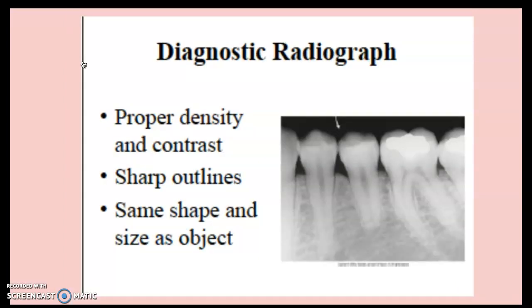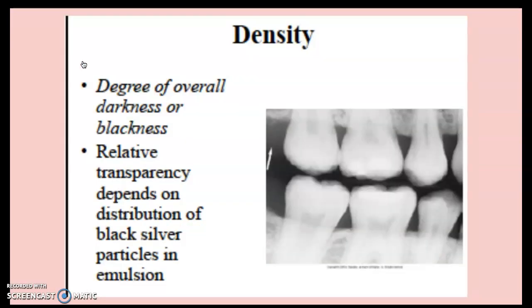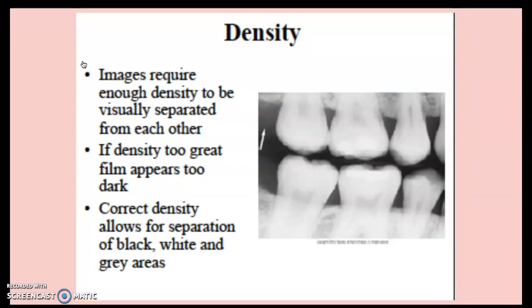A diagnostic image has the proper density and contrast, with sharp outlines and the same shape and size as the actual object — nothing is too magnified. Density is the degree of overall darkness or blackness, and its relative transparency depends on the distribution of black-silver particles in the emulsion. The image requires enough density to visually separate areas from each other. If density is too great, the film will appear too dark. Correct density allows for the separation of black, white, and gray areas.